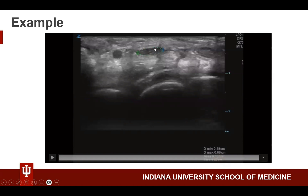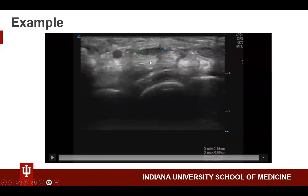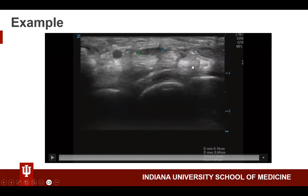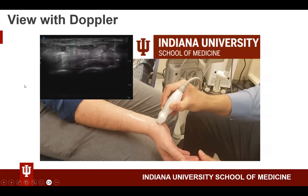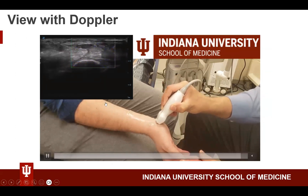Here we're taking a measurement of the cross-sectional area of the median nerve. In this participant, the area measured about 10mm², which is at the upper edge of the normal range, suggesting this is likely not carpal tunnel syndrome. Indeed, this participant had no symptoms and no findings of carpal tunnel syndrome. Using Doppler, we can see that with the probe steady there is no flow around the median nerve, suggesting no inflammation — another negative finding.